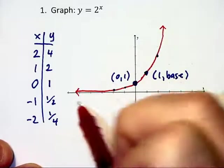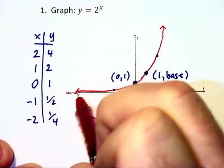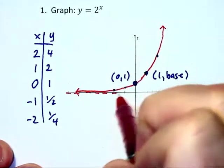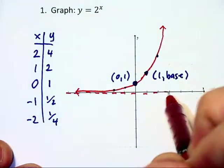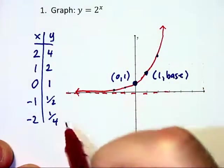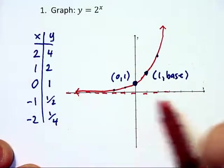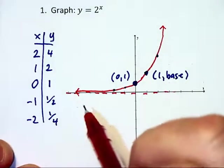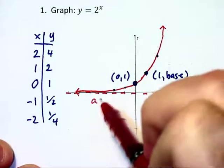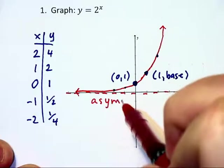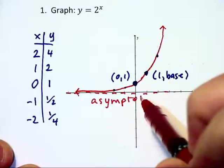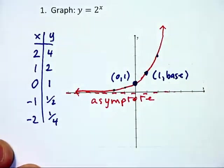Now, notice on the left we do not ever touch the x-axis. 2 to a negative power will get smaller and smaller, but it will never become 0. We say that this horizontal line that we're approaching is called a horizontal asymptote. A-s-y-m-p-t-o-t-e. It has a silent p in there.